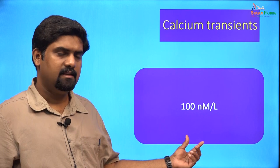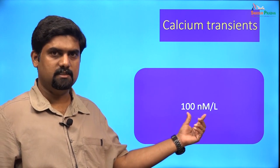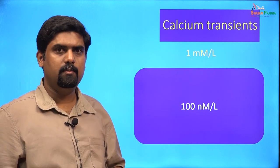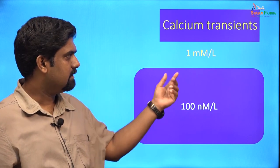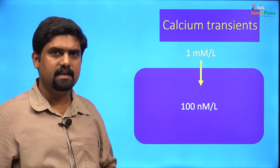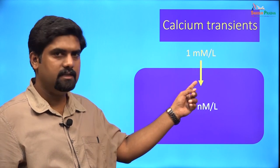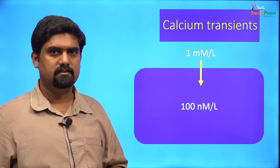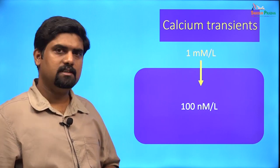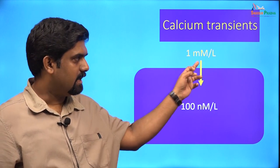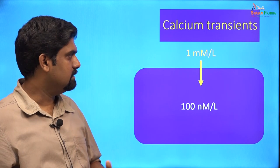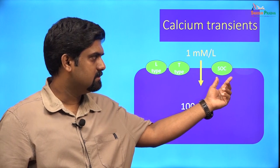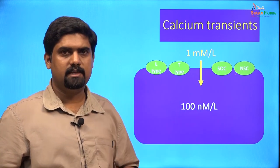This is the cartoon of a cell. The normal intracellular calcium concentration is about 100 nanomoles per liter, and the normal extracellular calcium concentration is about 1 millimole per liter. There is a concentration as well as electrical gradient for the influx of calcium from outside to the inside of the cell, but the cell is impermeable to calcium at rest. Various transporters on the cell membrane facilitate calcium entry, including L-type calcium channels, T-type calcium channels, store-operated calcium channels, and non-specific cation channels.